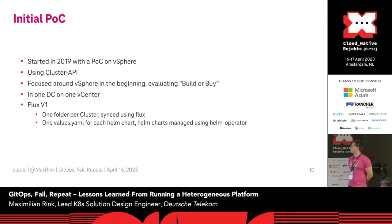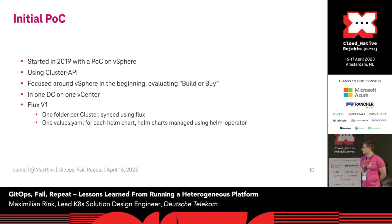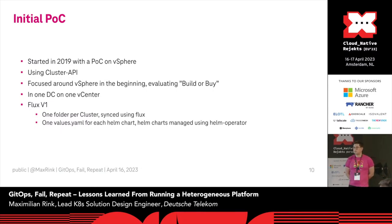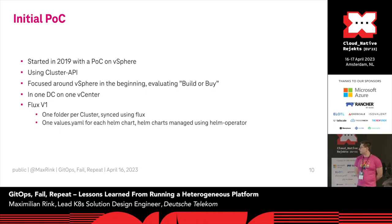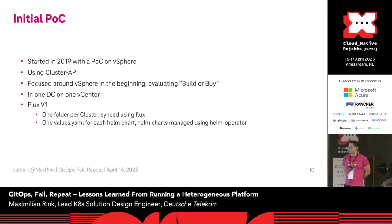We initially started in 2019 with a proof-of-concept of Cluster API on vSphere in one data center with one vCenter, still using Flux V1 at that point, with a very simple repository layout. Every cluster had its own repo. We just placed things there, Flux applied it, and it just worked. We mostly used upstream charts for everything, or built charts and upstreamed them if needed, and just had one YAML file per cluster that contained everything you wanted.